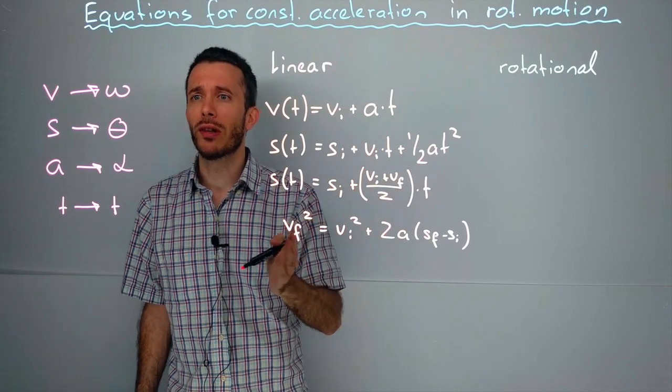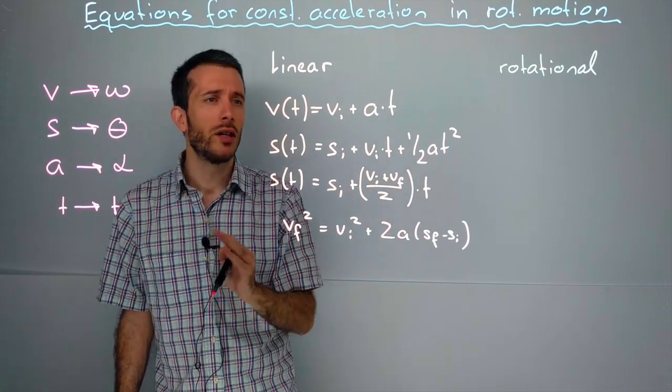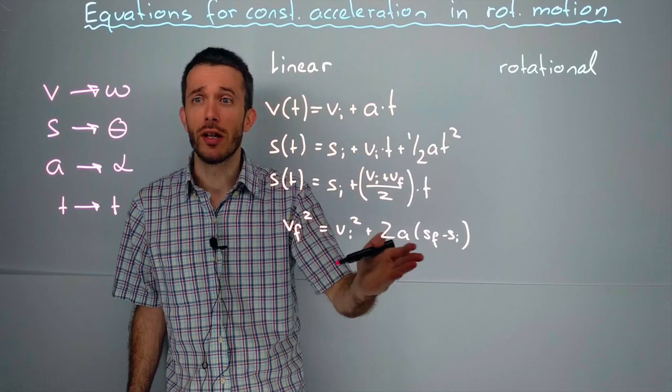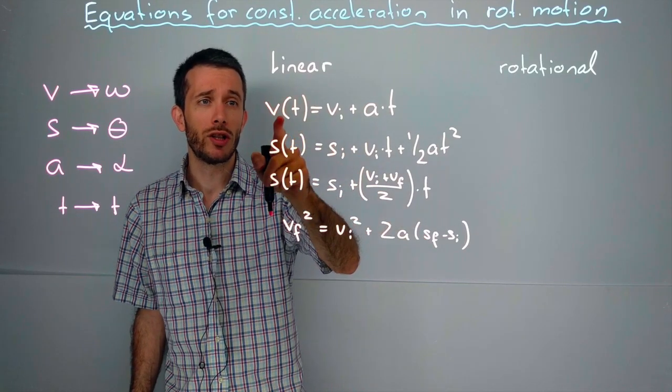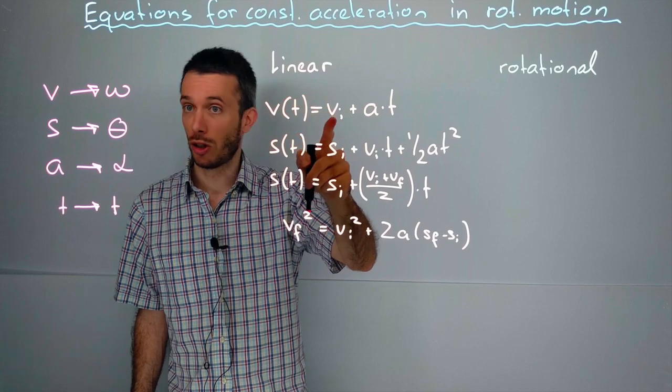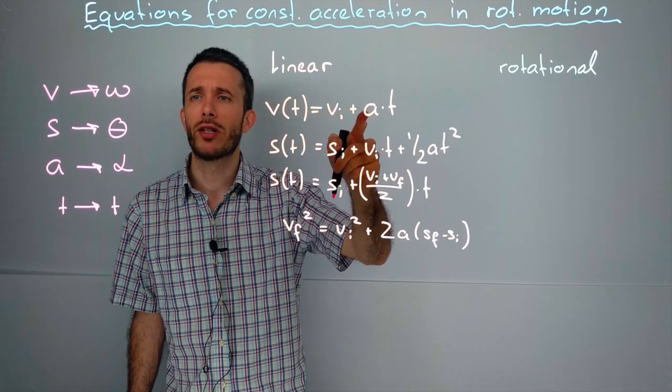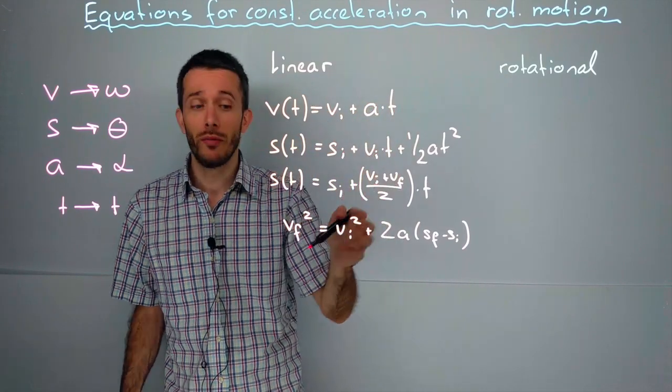As a little side note, if you really don't like these Greek characters, well, keep those equations and just treat them as rotational velocity as a function of time is initial rotational velocity plus rotational acceleration times time. The whole thing will work.